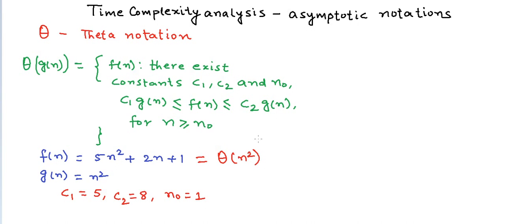Of all three asymptotic notations — Big O, Omega, and Theta — Theta notation best describes the rate of growth of a function because it gives us a tight bound, unlike Big O and Omega which give an upper bound and lower bound respectively. Theta notation tells us that the rate of growth of g(n) is as close to the rate of growth of f(n) as possible.